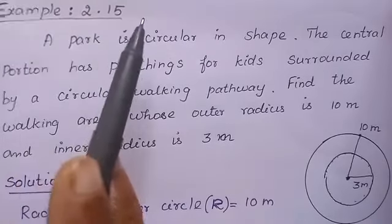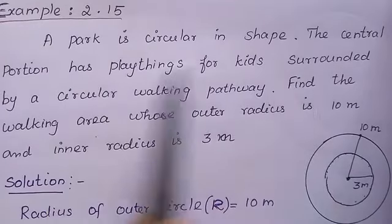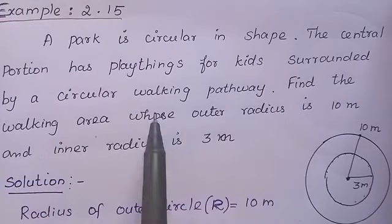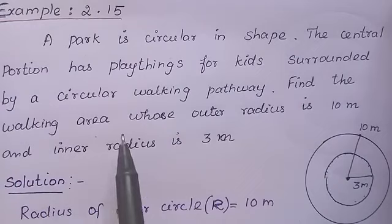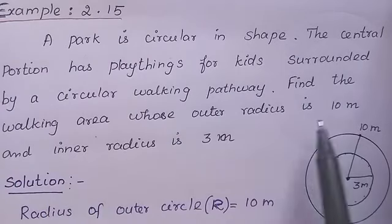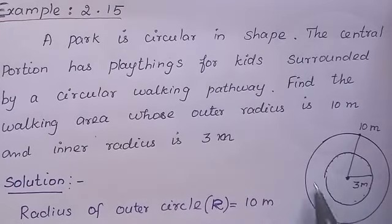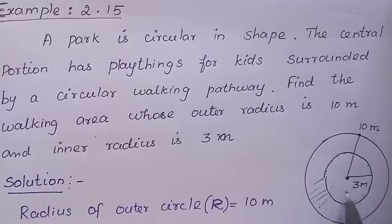Example 2.15: A park is circular in shape. The central portion has playthings for kids surrounded by a circular walking pathway. Find the walking area whose outer radius is 10 meters and inner radius is 3 meters. This is the circular path — the outer ring is the walking area and the inner portion is the playthings for kids.